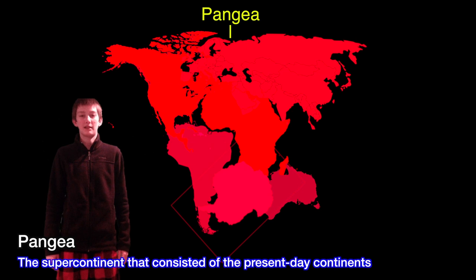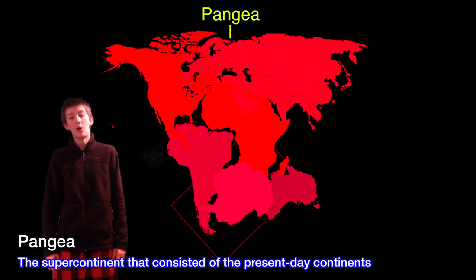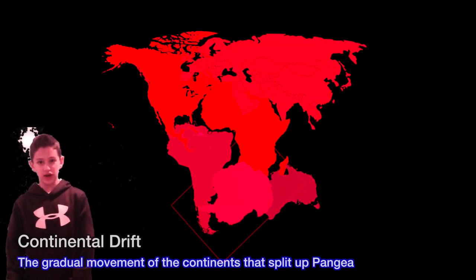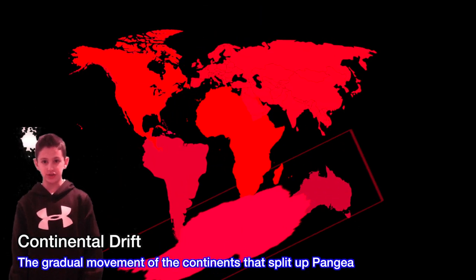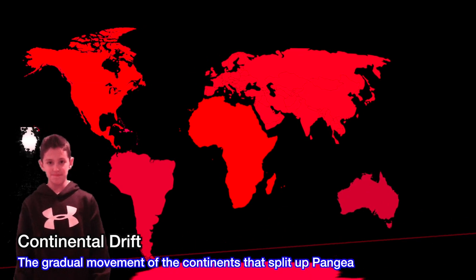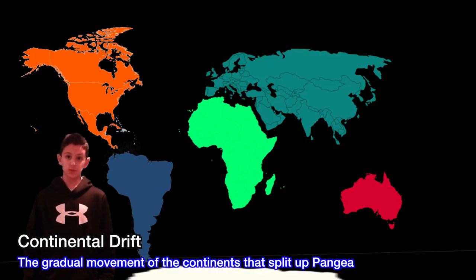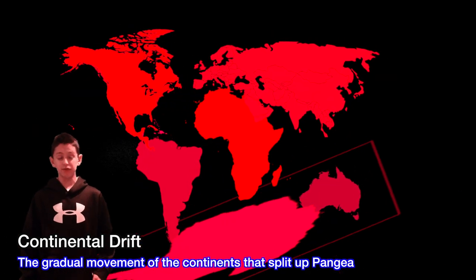Pangea is a theory that at one point in history, all seven continents were connected to form one supercontinent. Continental drift is the gradual movement of the continents over geological time. Continental drift is caused by a massive divergent plate boundary, which split up Pangea.